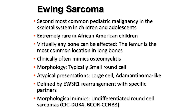In summary, Ewing sarcoma is the second most common pediatric malignancy in the skeletal system of children and adolescents. It can also occur in soft tissue and is extremely rare in African-American children. Virtually any bone can be affected; the femur is the most common location in long bones. Clinically, this tumor can mimic osteomyelitis. The morphology is a typical small round blue cell tumor, however there can be atypical presentations such as large cell and adamantinoma-like Ewing sarcoma. This tumor is defined by EWSR1 rearrangement with specific partners, and there are morphological mimics — undifferentiated round cell sarcomas with various translocations involving the CIC gene and the BCOR gene — which have different clinical behavior and treatment responses. Thank you very much.